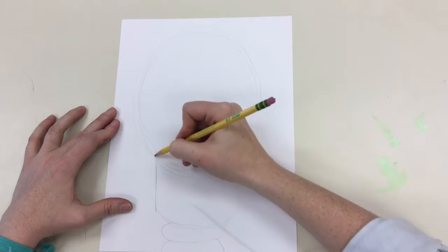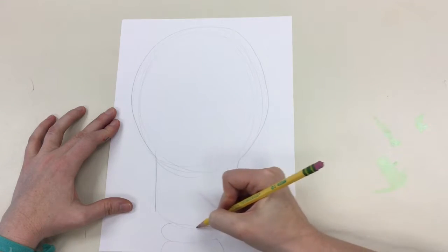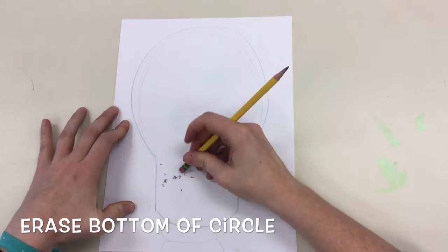Next you're going to trace around the outside of your skull so you have the skull shape that you want and erase the bottom part of the circle.